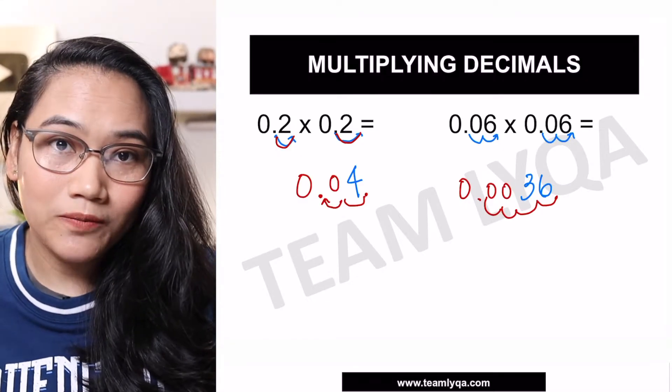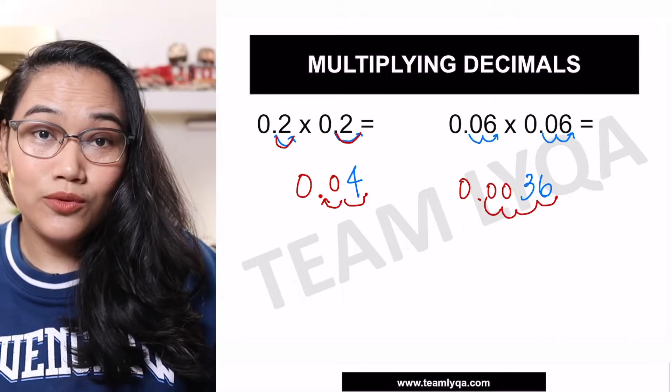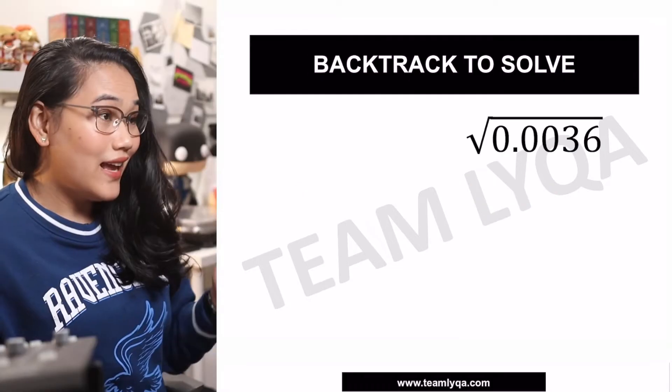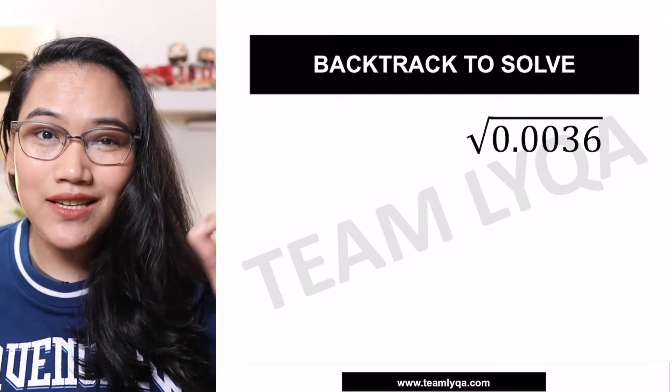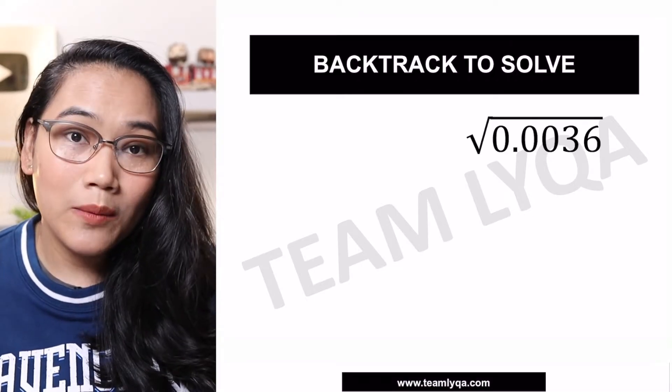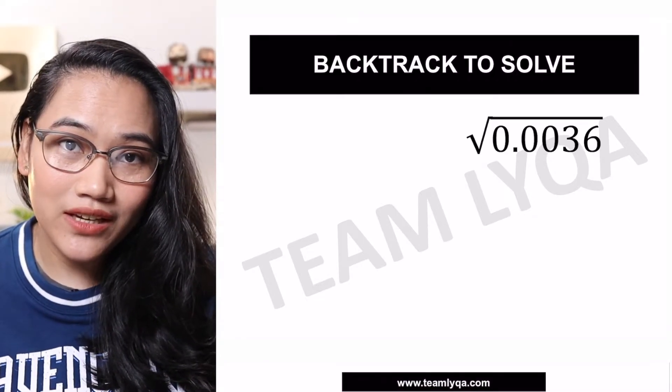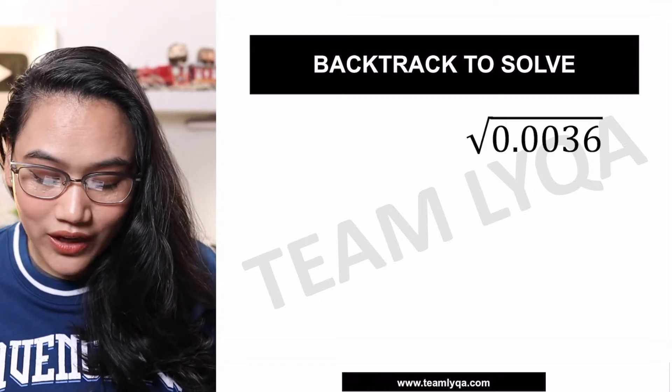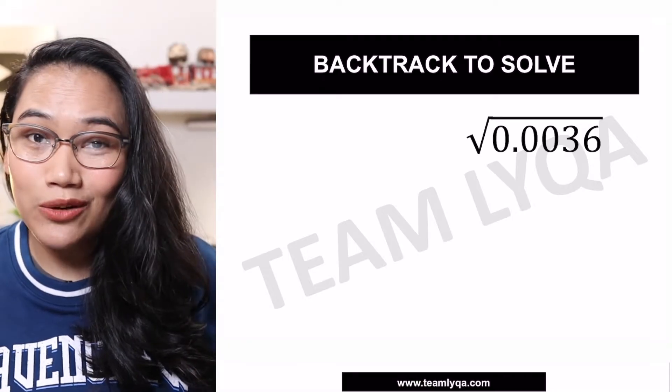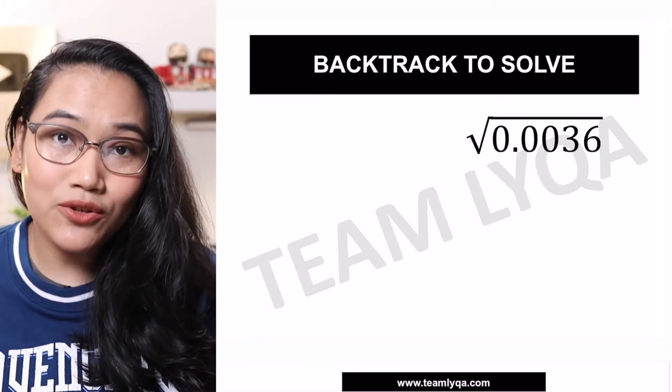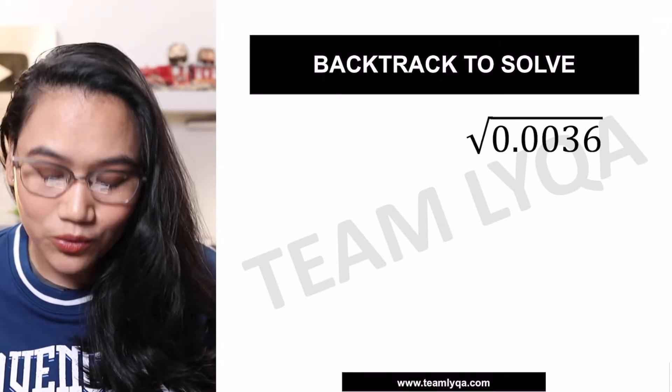Now, why did I explain this? Because when you talk about the square root of a decimal like this, what you're asking is, what is the number that when I multiply it by itself, will give 0.0036. So in order to do that, we are going to reverse engineer or backtrack the process we did earlier to solve this.